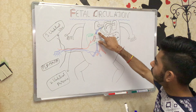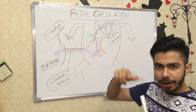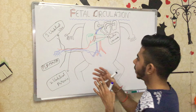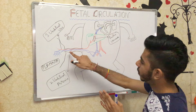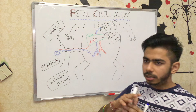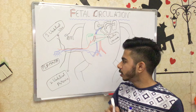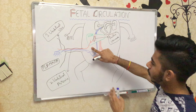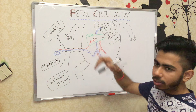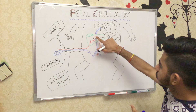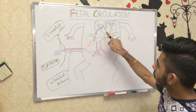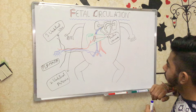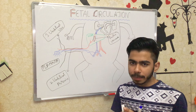From the ductus venosus, blood drains into the inferior vena cava, which in turn drains into the right atrium — just as we know from adult circulation. So the pathway so far is: placenta → umbilical vein → liver → ductus venosus → inferior vena cava → right atrium.